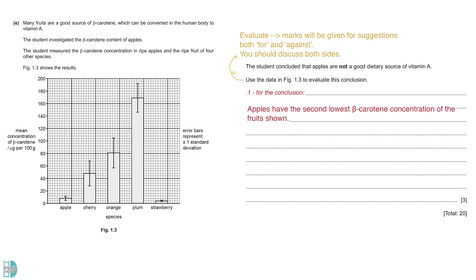The bar chart shows that apples have the second lowest beta-carotene concentration. This indicates that they are indeed not a good source of the nutrient. You can get one mark by quoting data to support this point.